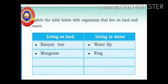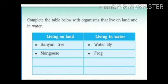Now I am going to give you a small activity. In your textbook, a table is given — complete the table with organisms that live on land and in water. Two examples are given: organisms living on land are banyan tree and mongoose. Do you know what a mongoose is? It is an animal. Organisms living in water are water lily and frog.